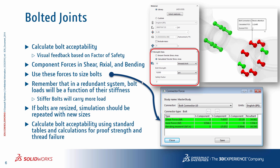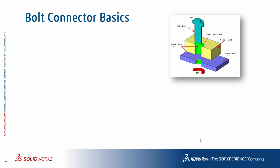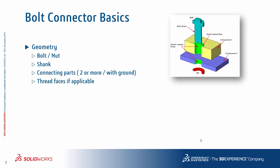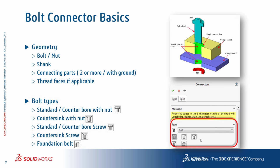We'll go through a couple of these calculations during this presentation. The bolt connector in SOLIDWORKS Simulation is really an effort to mimic a real-life bolt, and so it works on the same principles when it comes to geometry and bolt types. A typical geometry involves the bolt and nut, the shank, the connecting parts, and the thread faces if applicable. In SOLIDWORKS Simulation, there's a variety of bolt types supported, such as standard counter-bore with nut, counter-sink with nut, standard counter-bore screw, counter-sink screw, and the foundation bolt.